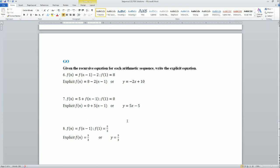Here's the goal part. The goal part says, given the recursive equation for each arithmetic sequence, write the explicit equation. So here we go: we have the first term, then we also have the explicit equation. What I did is I found the y-intercept value to get it into y equals mx plus b. So in explicit, the first term here is 8 minus 2, because that is the common difference times the previous term. This is arithmetic.